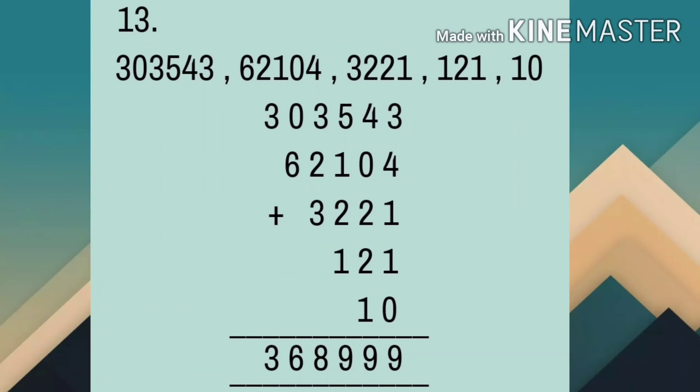Now next question is question number 13. दिये हुए numbers को हम column में arrange करेंगे, उसके बाद ones के place से addition करना start करेंगे। 3+4=7, 7+1=8, 8+1=9, 9+0=9; 4+0=4, 4+2=6, 6+2=8, 8+1=9; 5+1=6, 6+2=8, 8+1=9; 3+2=5, 5+3=8; 0+6=6, और 3 को as it is लिख दिया। Clear? Easy?